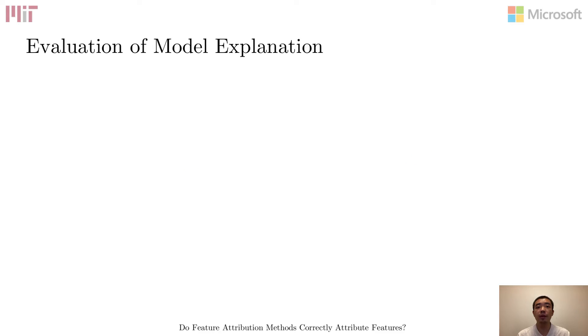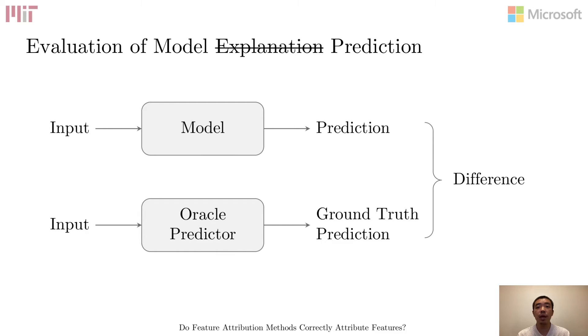So how should we evaluate model explanations for their correctness? Before answering this question, let's first look at how we evaluate model predictions. It is simple. We have an oracle predictor, typically the human annotator, that produces the ground truth outputs, and we compare the model prediction with it using metrics such as accuracy rate.